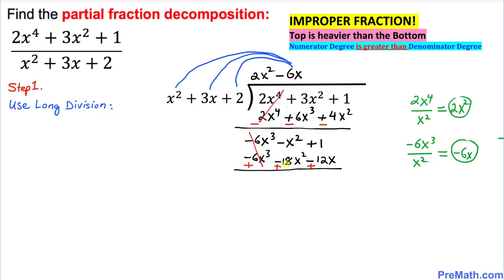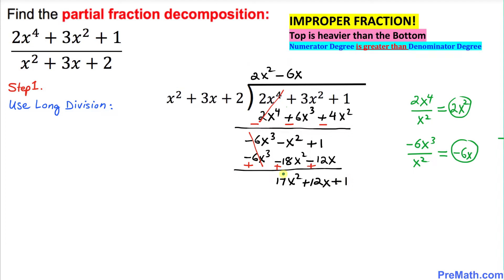After cancellation we get positive 17x² and positive 12x, and we bring down the +1. Now our leading term is 17x², divided by the leading term of the divisor x², which gives us positive 17. So we write +17 on the top.